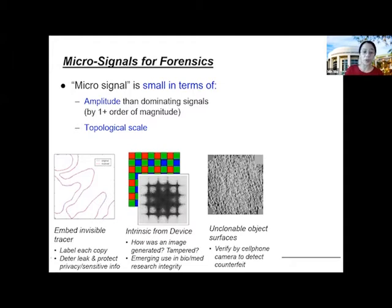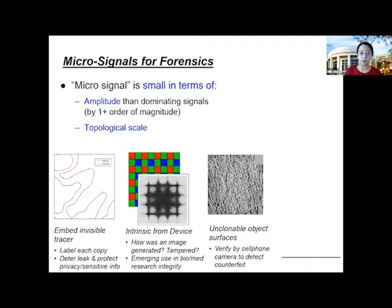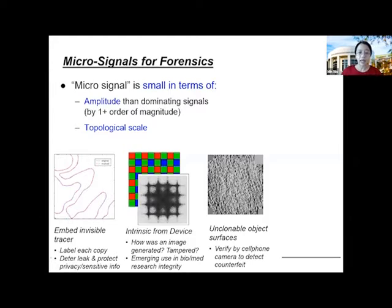Today, almost all Hollywood films, when they come out from the studio for distribution, have such a micro-signal — called a forensic watermark — embedded in. They discourage unauthorized distribution, whether by Oscar judging committees, individual movie critics, or theaters, to prevent illicit distribution.